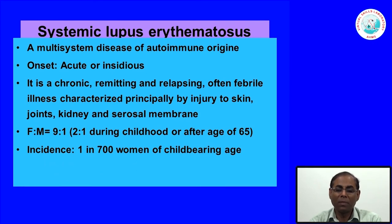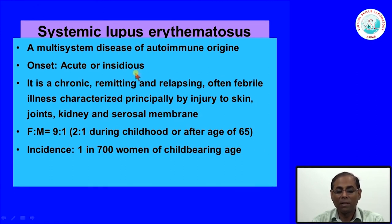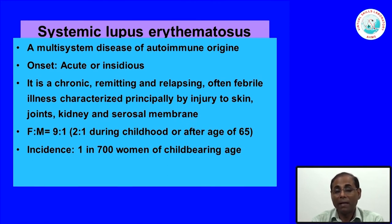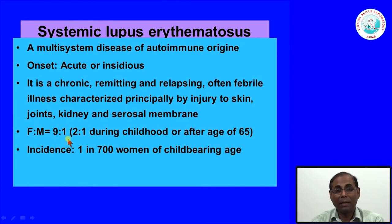SLE, or systemic lupus erythematosus, is a multi-system disease of autoimmune origin with acute or insidious onset. It is a chronic, remitting and relapsing disease, often febrile, characterized principally by injury to the skin, joints, kidney, and serous membranes. It can also involve the central nervous system. Clinically, a case of SLE can present to any specialty of medicine — dermatology, neurology, cardiology — depending upon which organs are involved.